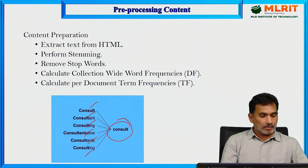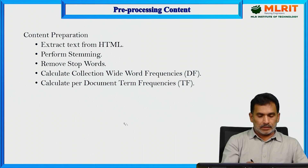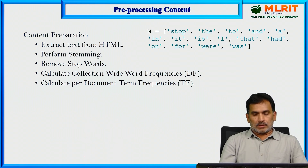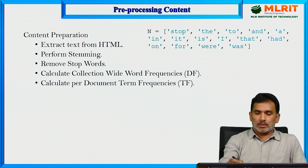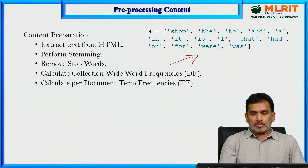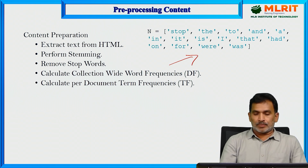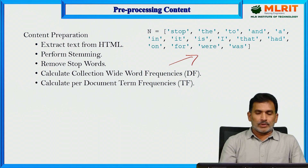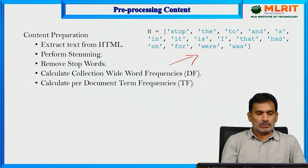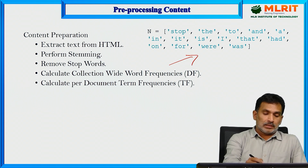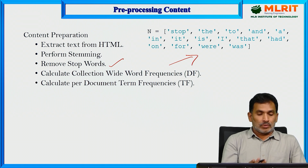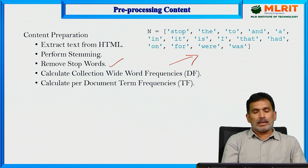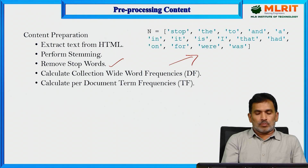Removing stop words is another very important step in text analysis. Stop words are common words such as 'the', 'to', 'and', etc., specified in a vector. All stop words to be removed must be specified, and those are then removed from the text. After that, we calculate collection-wide word frequencies.